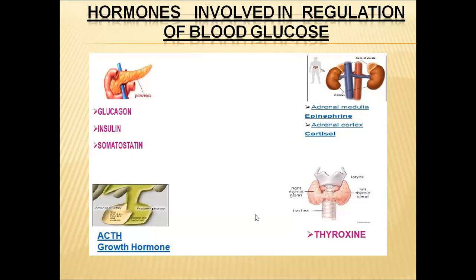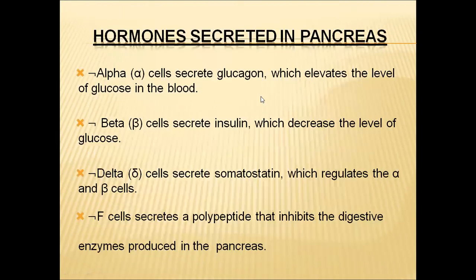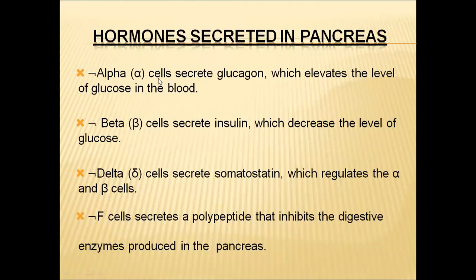Now let us see the three hormones of the pancreas. The pancreas is a mixed gland with endocrine and exocrine portions. In the endocrine portion, it has islets of Langerhans cells with three types: alpha cells, beta cells, and delta cells. Alpha cells secrete glucagon hormone, beta cells secrete insulin hormone, and delta cells secrete somatostatin hormone.